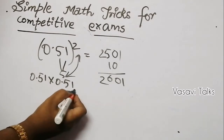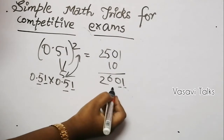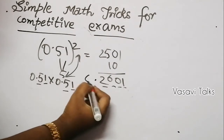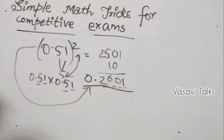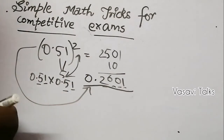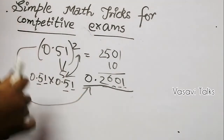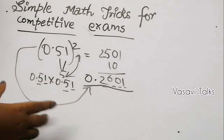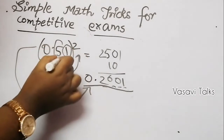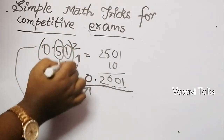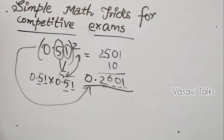For the decimal result, count the decimal places: 0.51 has 2 decimal places, so 0.51 squared has 4 decimal places. The answer is 0.2601. That's how you find the square of a two-digit number — or a decimal — using this method. Trick 1 ends here.